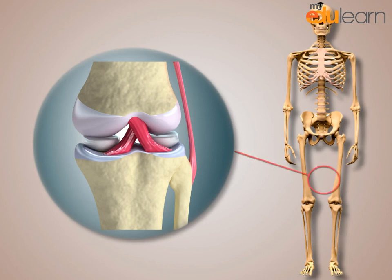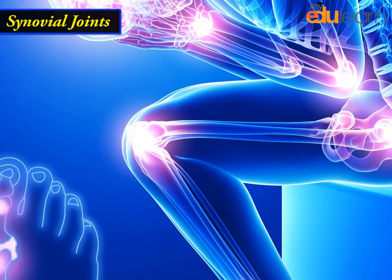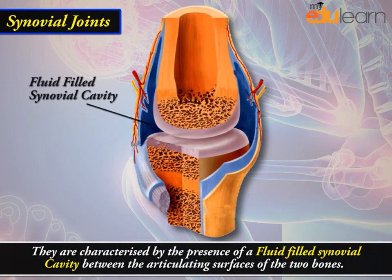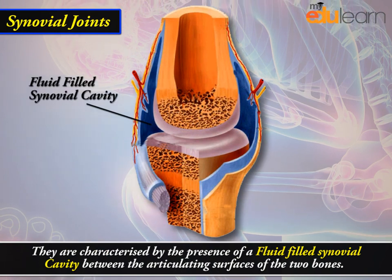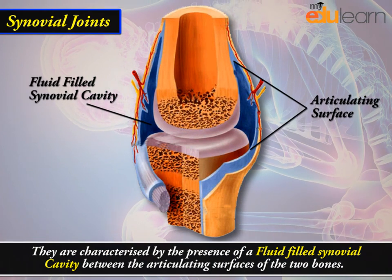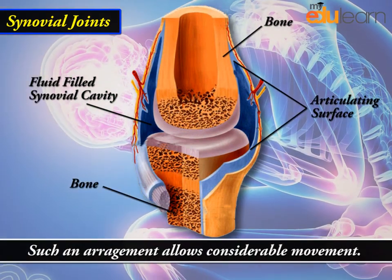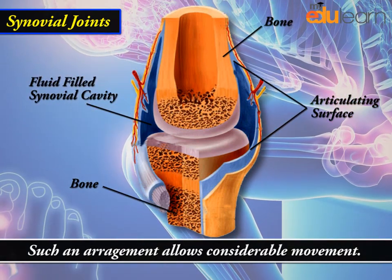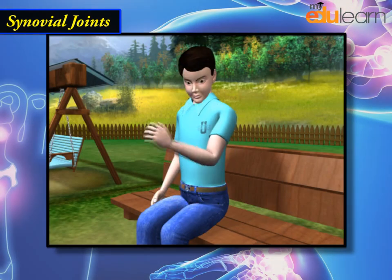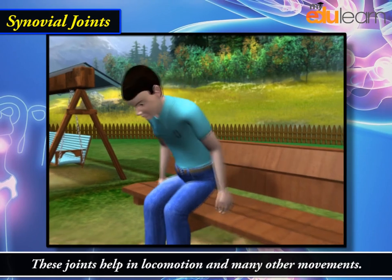The third type of joints is the synovial joints. They are characterized by the presence of a fluid-filled synovial cavity between the articulating surfaces of the two bones. Such an arrangement allows considerable movement. These joints help in locomotion and many other movements.